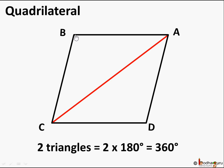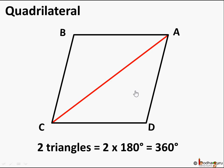Let's revise how we did this for a quadrilateral. Here is quadrilateral ABCD. From point A we drew a diagonal AC, dividing this quadrilateral into two triangles. Since the sum of interior angles of a triangle is 180 degrees and there are two triangles, the sum of all interior angles of the quadrilateral is two times 180 degrees, which equals 360 degrees.